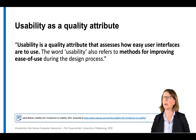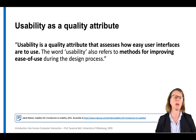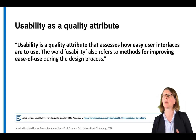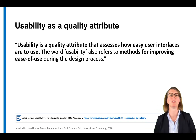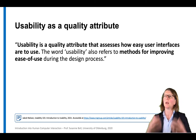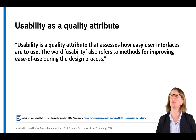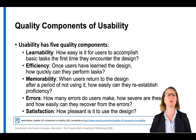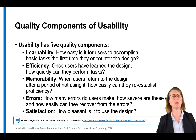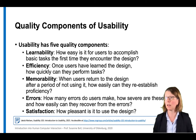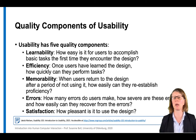Usability has been addressed by many individuals, and one very famous researcher is Jacob Nielsen, who described usability as a quality attribute. An interface with high usability is easy to use. He identified five key quality components: learnability, efficiency, memorability, errors, and satisfaction. The first question is: can a user actually understand the system when they come to it for the first time? Can they learn what they can do with it?